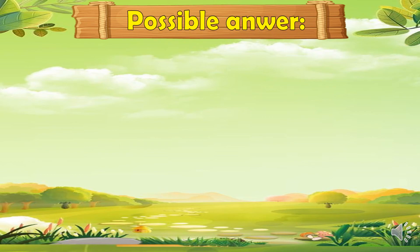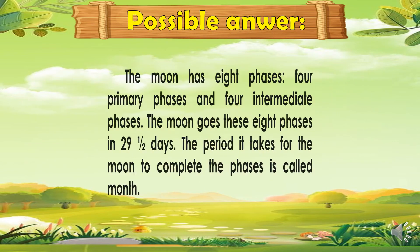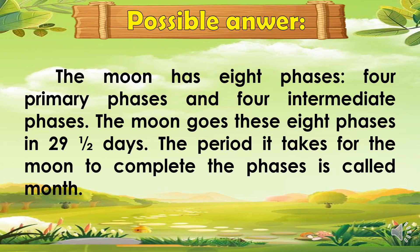Here is a possible answer. The moon has 8 phases: 4 primary phases and 4 intermediate phases. The moon goes through these 8 phases in 29 and a half days. The period it takes for the moon to complete the phases is called a month.